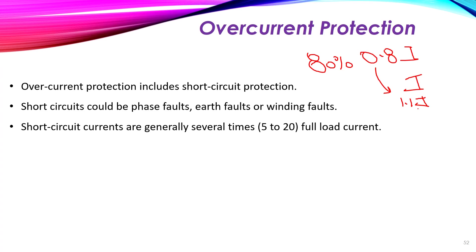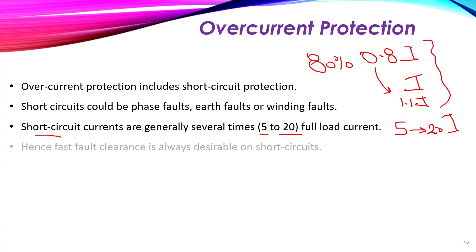Short-circuit currents of five to twenty times the full-load current are very large compared to overloading values. Due to these high currents during a short circuit, fast fault clearance is needed to protect the circuit, because allowing this current to flow for even a few seconds will destroy the machine.